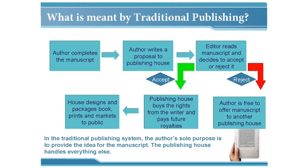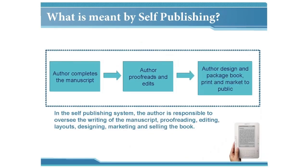If rejected, the author can offer it to other publishers for rewrites. If accepted, the publishing house buys the rights from the writer and pays them future royalties. The house then completes the design, packages, markets, and sells the book. One of the best advantages of traditional publishing is the prestige from a well-known company. However, you can expect a lower profit share — usually a 10% royalty — as the lion's share goes to the publishing house.